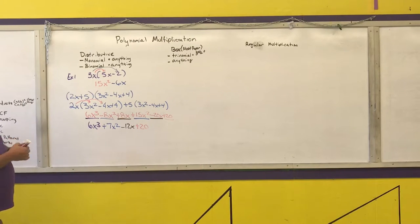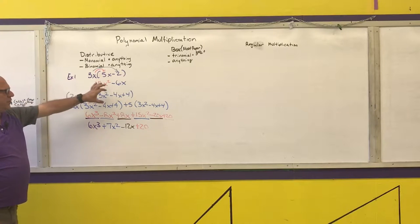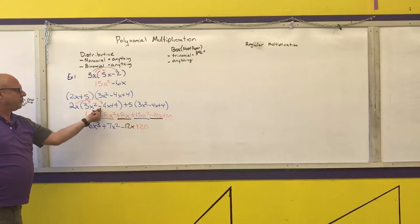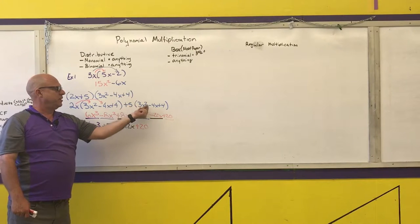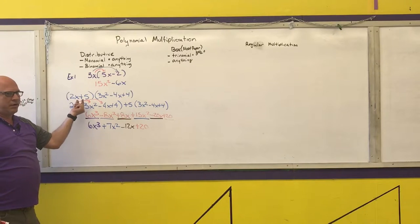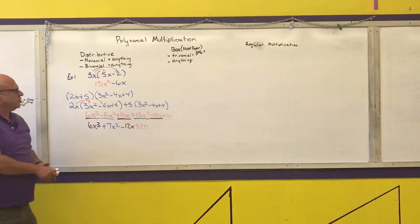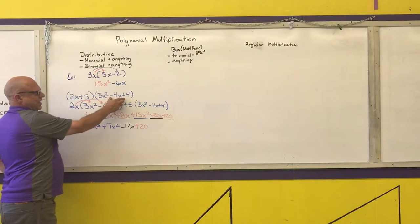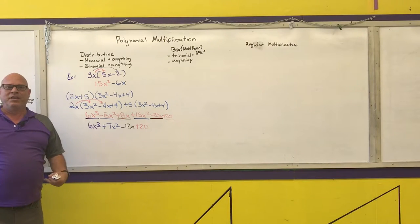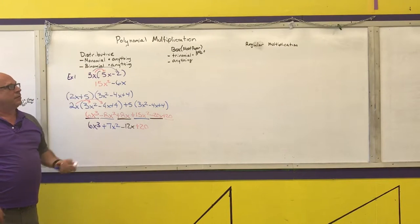For the distributive method of multiplication, you take the first polynomial and write it in front of the second polynomial for however many terms there are, then do monomial times anything for each part. Once you get beyond a binomial times something, this becomes very, very long — and that's why I don't recommend using it for anything more than a binomial times something.